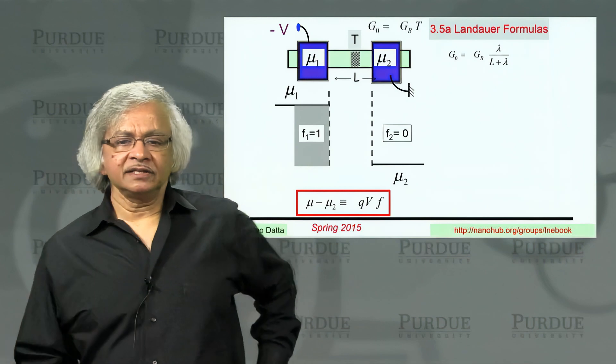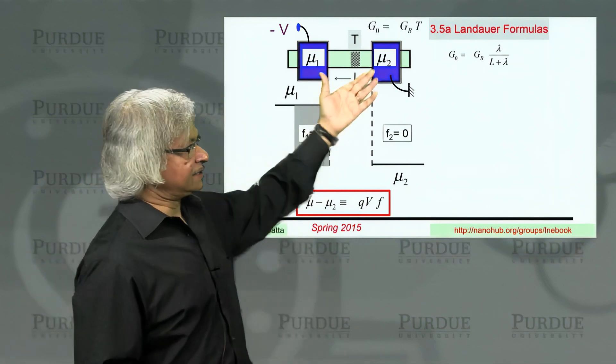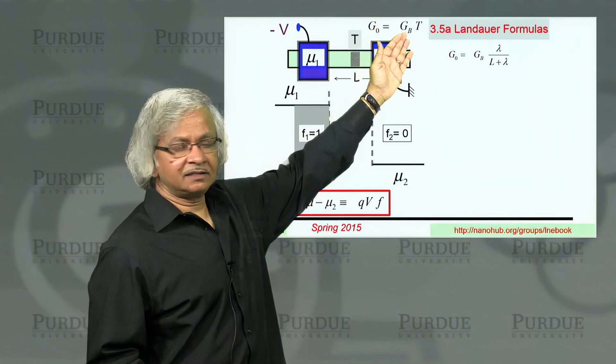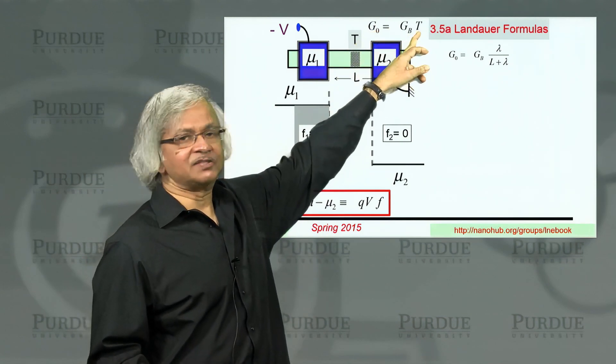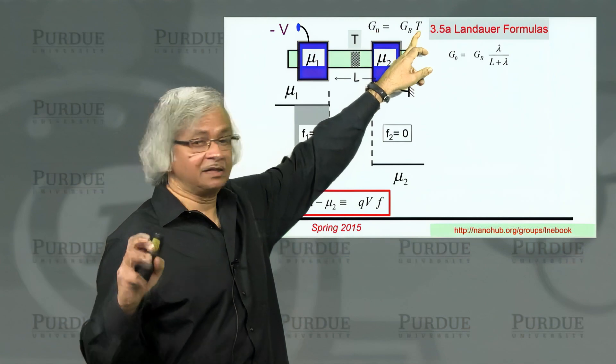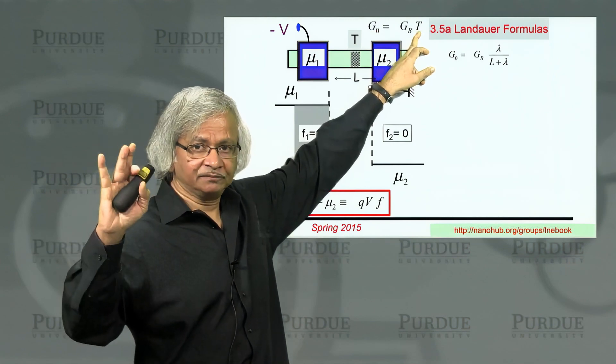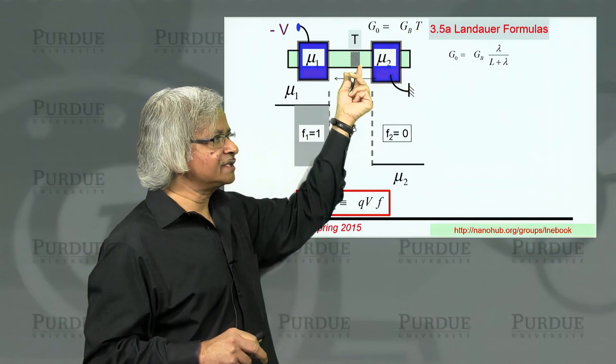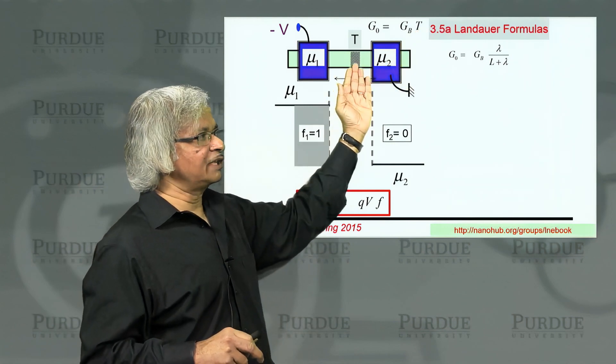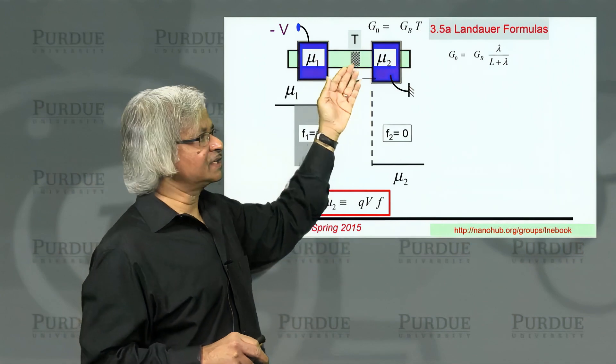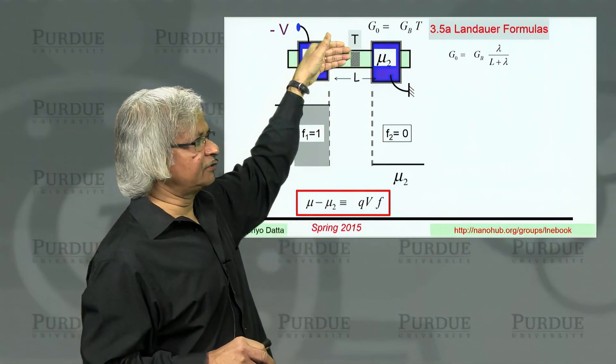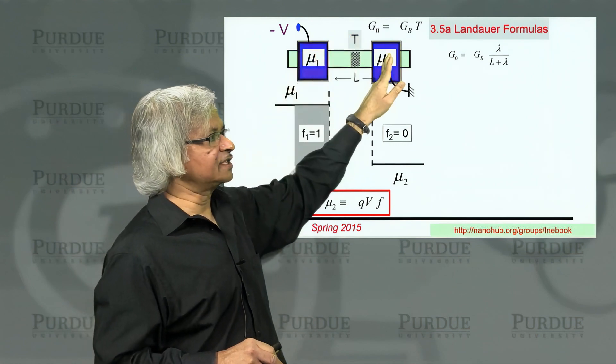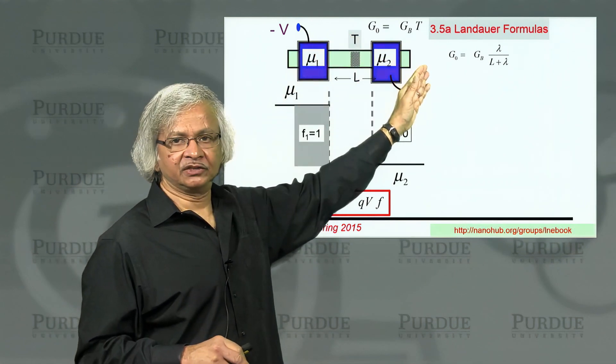What we'll show is that the conductance will be given by the ballistic conductance times this, what's called the transmission. I'm using T, but it's got nothing to do with temperature. This is what you call the transmission coefficient.